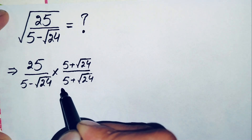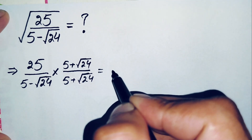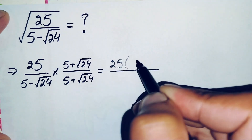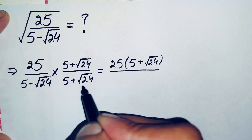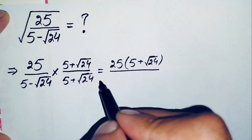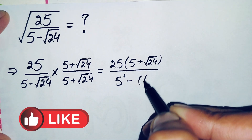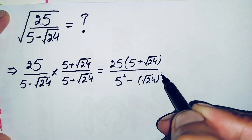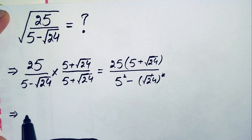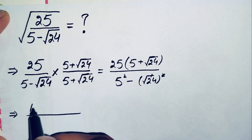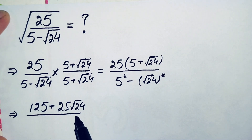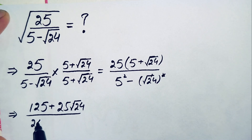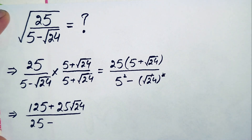Multiplying the two numbers, the numerator becomes 25 times (5 plus square root of 24). The denominator uses the identity (a minus b)(a plus b) = a² minus b², where a is 5 and b is square root of 24. So the denominator becomes 5² minus (square root of 24)², which is 25 minus 24.